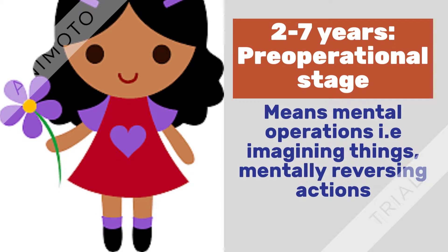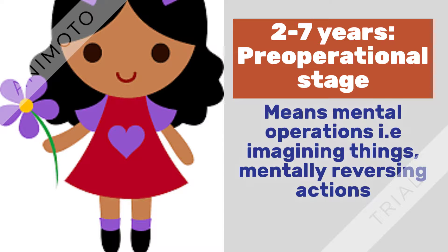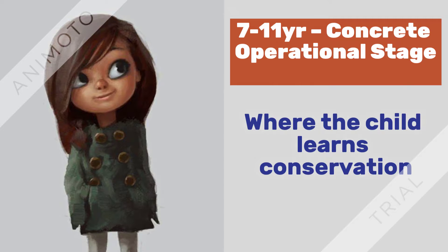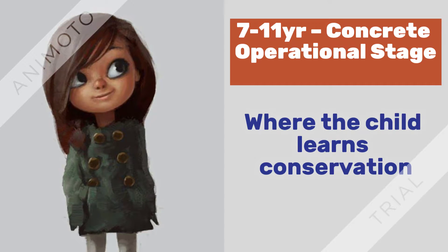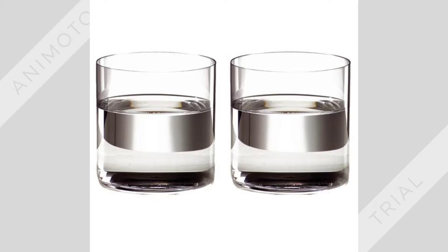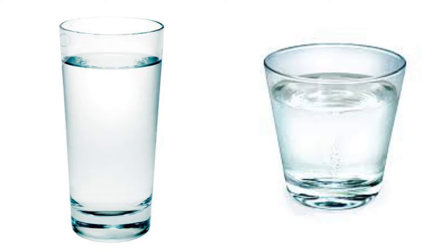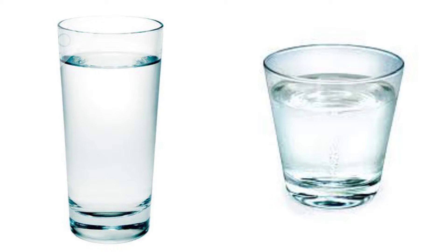The pre-operational stage occurs when the child is from 2 to 7 years old. The child is able to carry out mental operations, for example imagining things or mentally reversing actions. The main development in this stage is that children start to engage in pretend play and they realise that words symbolise objects. The concrete operational stage occurs when the child is from 7 to 11 years old. In this phase the child learns what conservation is. A test involves two glasses with equal amounts of water; the child recognises they are equal. The water is then poured into a long skinny glass and a short fat glass. Before this stage, a child will say there is more water in the long skinny glass because it is higher, but a child in the concrete operational stage will correctly identify that there is an equal amount of water in both glasses.